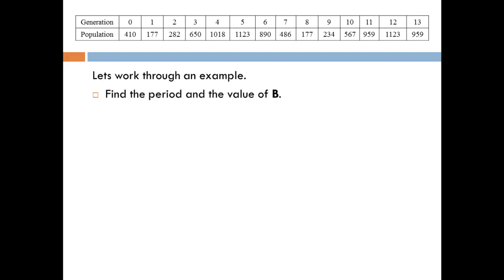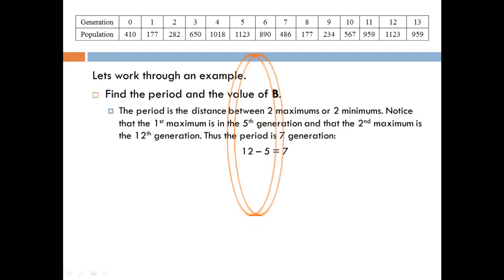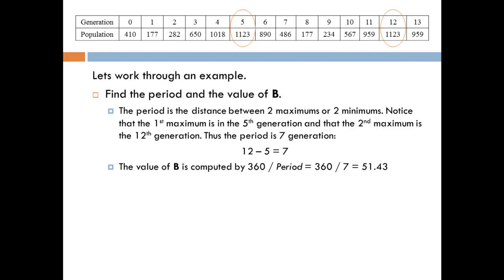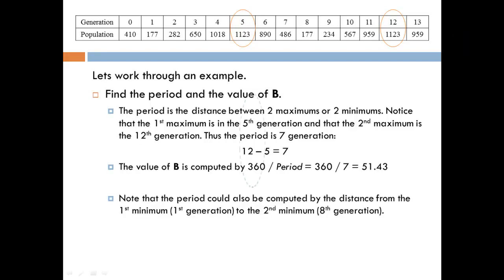So in order to find a function for this data, the first thing we need to do is determine the period, and once we know the period we can find B. The easiest way to find the period is looking at the distance between two maximums, or you could do it with two minimums. The first maximum occurred in the 5th generation and the second maximum occurred in the 12th generation. So 12 minus 5 gives us a period of 7 generations. And in order to compute B, we know B was 360 divided by the period, so that would be 360 divided by 7, which gives us about 51.43. We could have done the same thing by computing the period using the minimums. The minimum was in the first generation and in the 8th generation, so from the 1st to 8th is a distance of 7 generations.